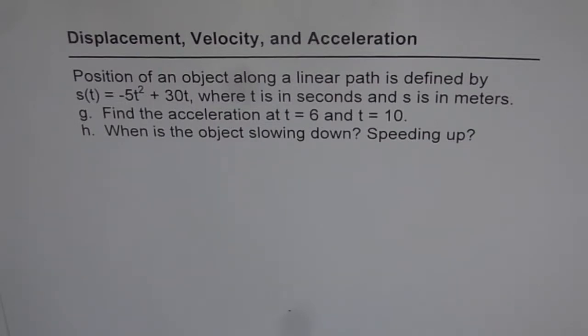Part g is: find the acceleration at t = 6 and t = 10. Part h is: when is the object slowing down and speeding up? Let's understand these parts of the same question where we understood velocity, moving in one direction or the other, distance and displacement.